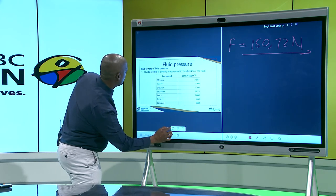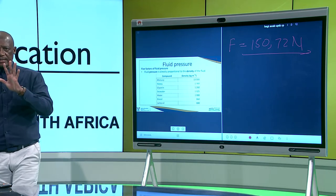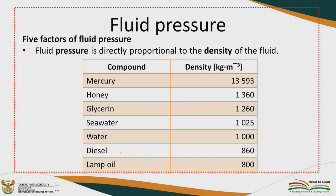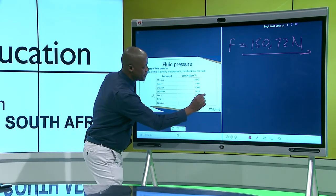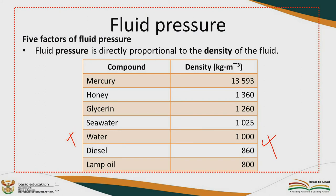Now we come to the factors. There are five factors of fluid pressure. Number one: fluid pressure is directly proportional to the density of the fluid. The density of water, for example, is 1,000. So fluid pressure is directly proportional to the density.